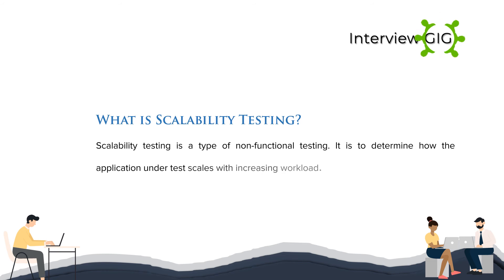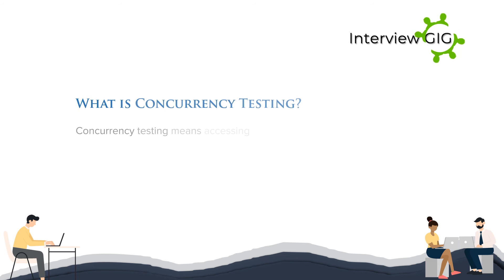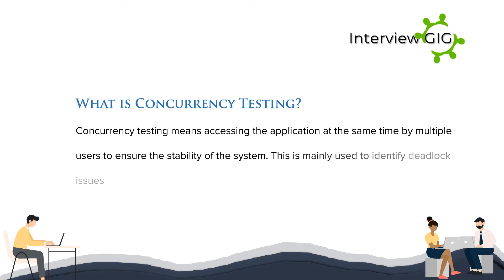What is scalability testing? Scalability testing is a type of non-functional testing used to determine how the application under test scales with increasing workload. What is concurrency testing? Concurrency testing means accessing the application at the same time by multiple users to ensure the stability of the system. It is mainly used to identify deadlock issues.